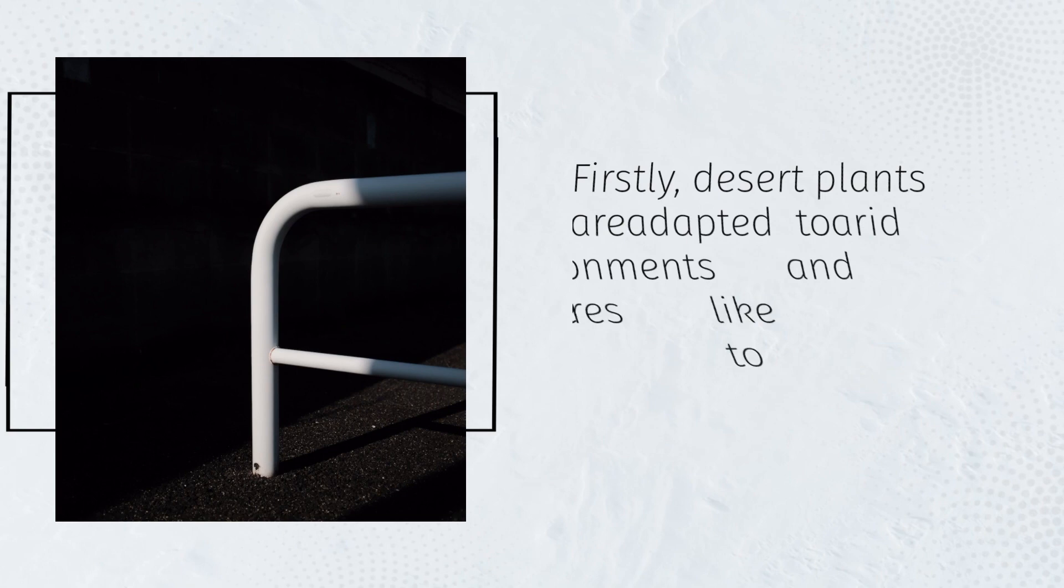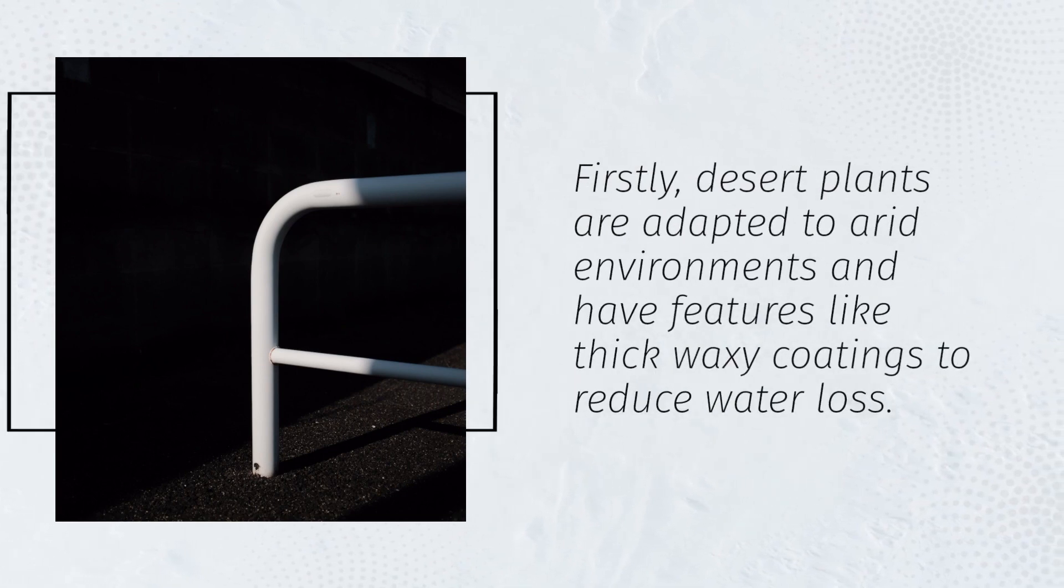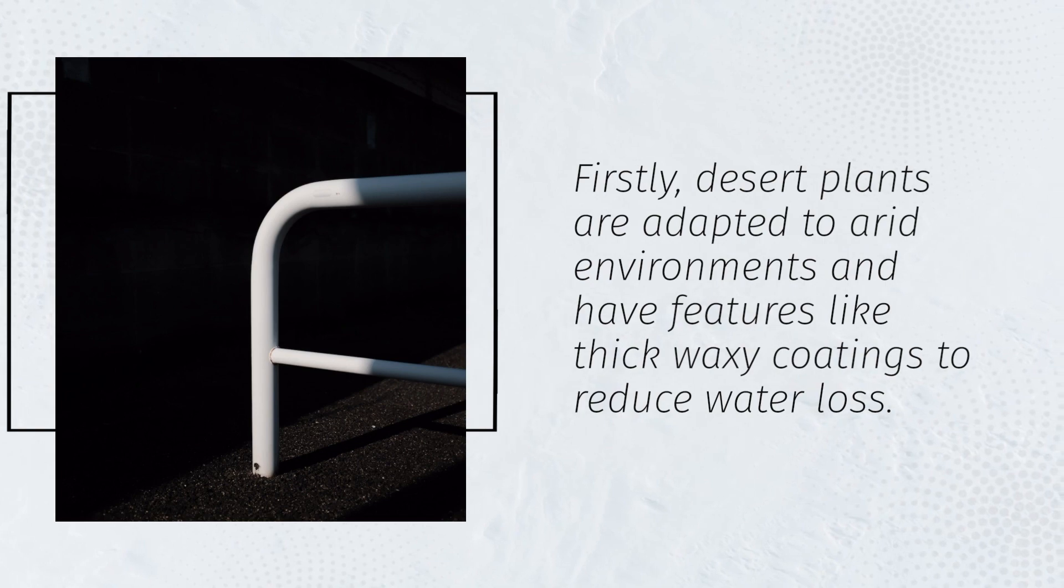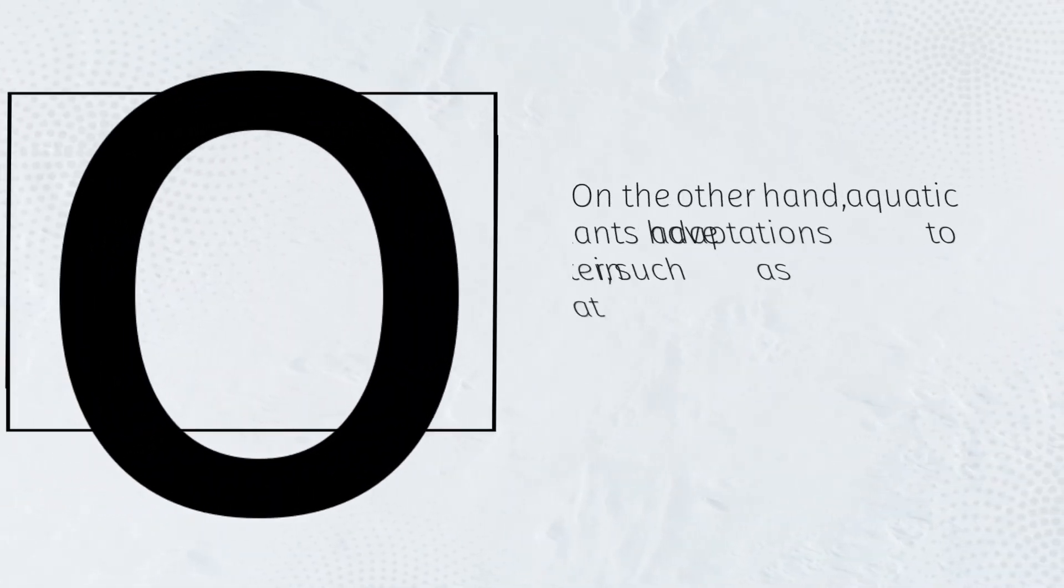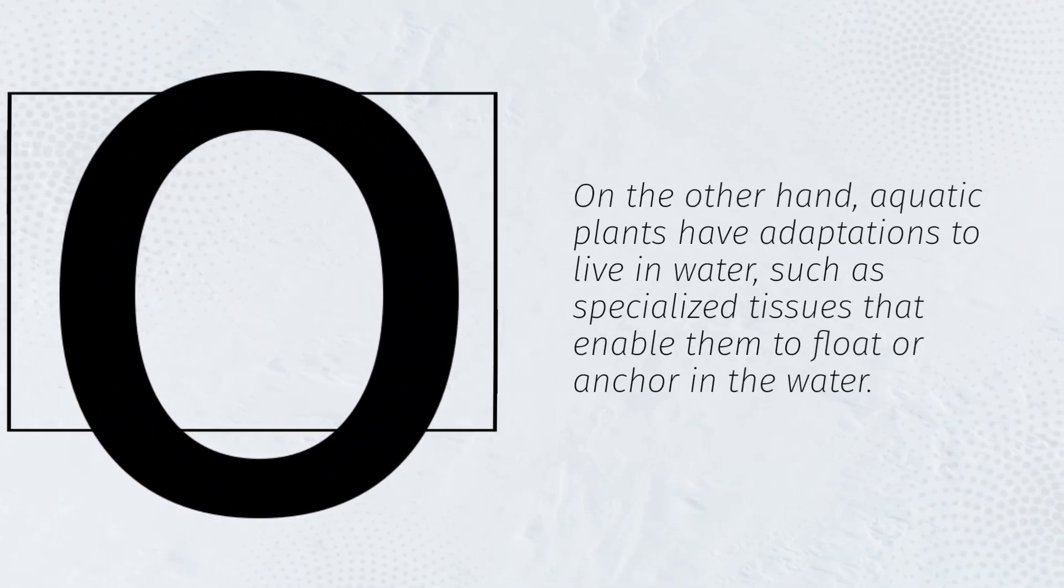Firstly, desert plants are adapted to arid environments and have features like thick waxy coatings to reduce water loss. On the other hand, aquatic plants have adaptations to live in water, such as specialized tissues that enable them to float or anchor in the water.